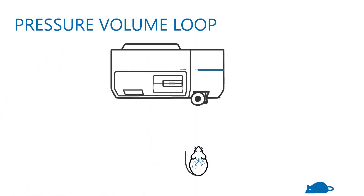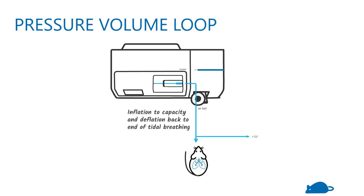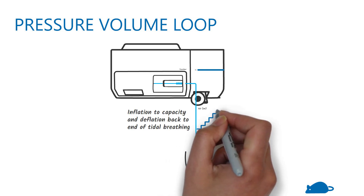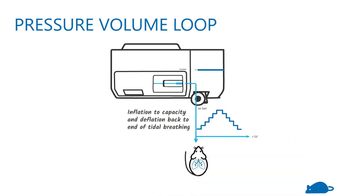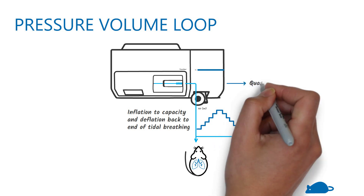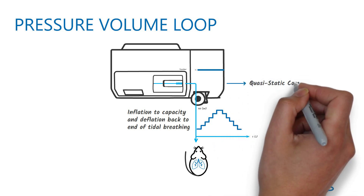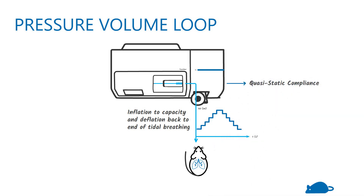In the pressure volume measurement, the lungs are inflated to total lung capacity and then deflated in a stepwise manner. The flexi-vent measures the quasi-static compliance of the lung across the entire inspiratory capacity.